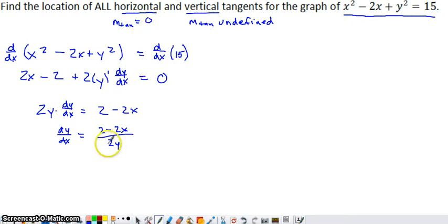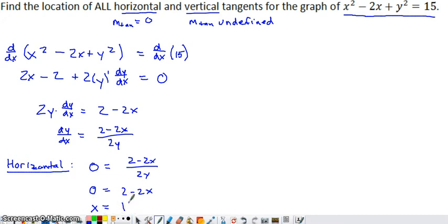We want to figure out when the derivative equals 0, which determines when the slope of our tangent line is 0. For the horizontal part, set our derivative equal to 0. When you set this derivative equal to 0, multiply both sides by 2y to get 0 = 2 - 2x. Add the 2x and divide by 2, and you get x = 1.